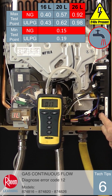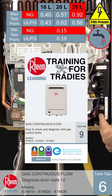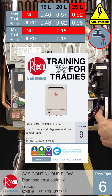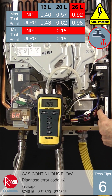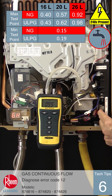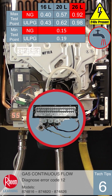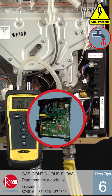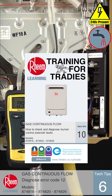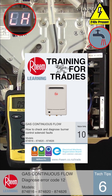If the burner pressure is incorrect and adjustment is not possible, follow details in Tech Tips number 9 which covers how to diagnose inlet gas control valve faults. If the burner test point pressure is correct during the ignition sequence, there may be a problem with the burner solenoid valves 1, 2 or 3 or the PCB. Tech Tips number 10 covers how to diagnose these faults.